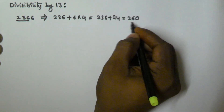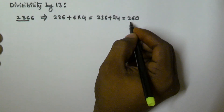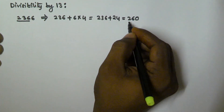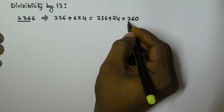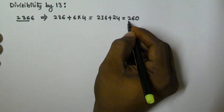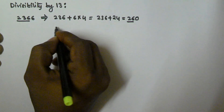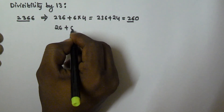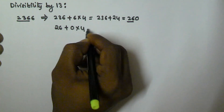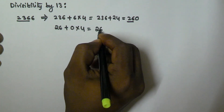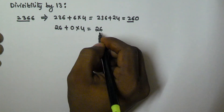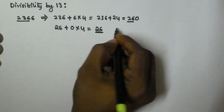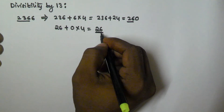We still do not know if 260 is divisible by 13, so we repeat the same procedure. We take all digits except the unit digit — that is 26 — and then add the unit digit times 4: 26 plus 0 times 4 equals 26. We know that 26 is divisible by 13, so 2366 is also divisible by 13.